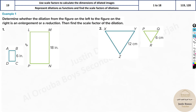We need to find the scale factors. How do you find them? We can see there is some enlargement here — this one is small and this one is big, so obviously there's enlargement. Whereas this one is a reduction — that's obvious just from looking at it.